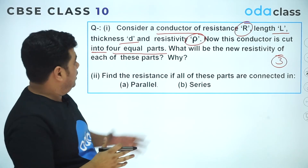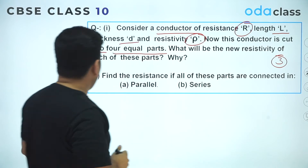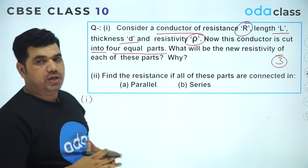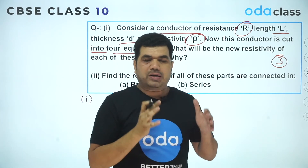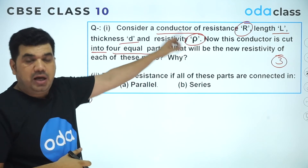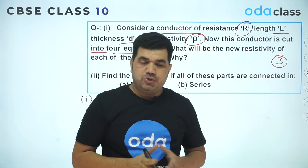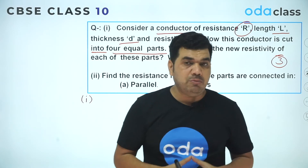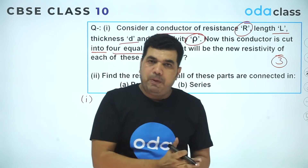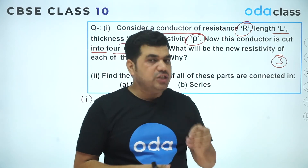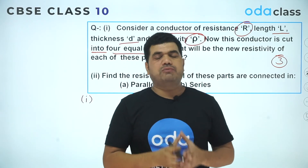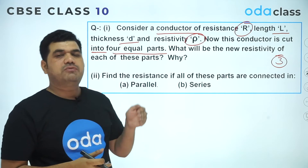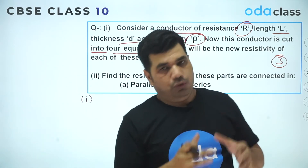The answer to the first part is straightforward. Resistivity ρ is a property of the material. When we cut the conductor, the material remains the same. Whether you cut it into two, three, four, or six parts, each part has the same material, so the resistivity of each part remains ρ.